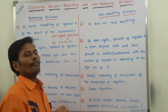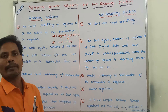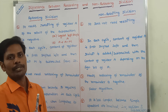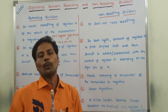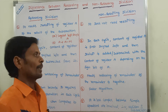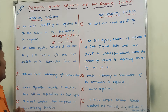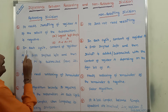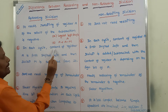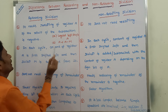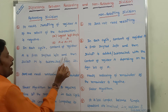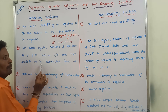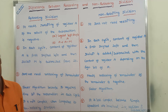In the case of non-restoring division, it does not need any restoring of register A. Moving to the second point in restoring division: in each cycle, the content of register A is first shifted left and then divider M is subtracted from it.